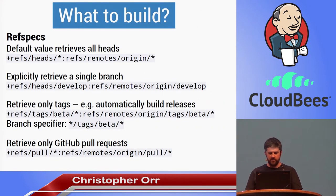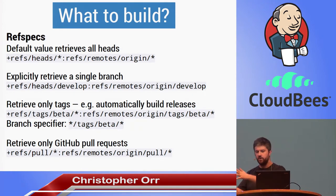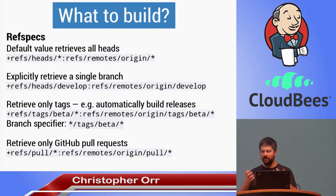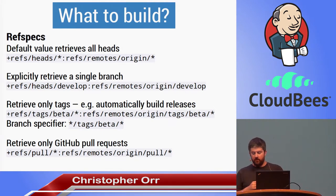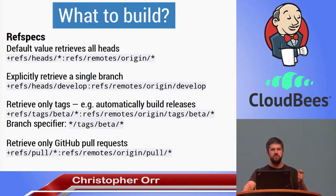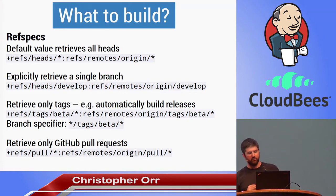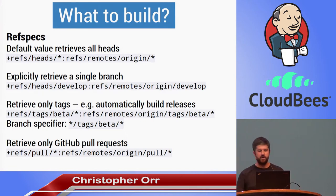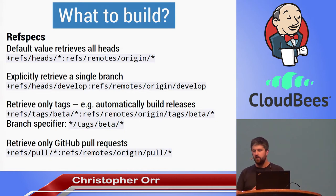Ref specs look a bit cryptic, but they're essentially saying: if you've got this set of Git references on the server, I want to download them to my local copy. By default Jenkins downloads all branches, all heads, and then you use the branch specifier to say you only want to build master, or you can explicitly retrieve only a single branch. One thing we do quite often is retrieve only tags. For example, we build a beta version of our Android app only when you push a Git tag called beta slash whatever. In Jenkins, you enter this in your ref spec as plus refs/tags/beta/... and then have a branch specifier that says only build things matching that pattern - ignore branches, just build a tag.